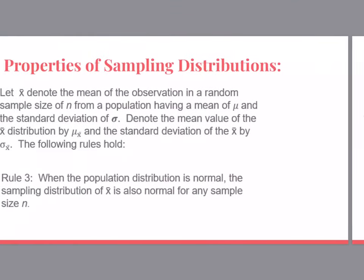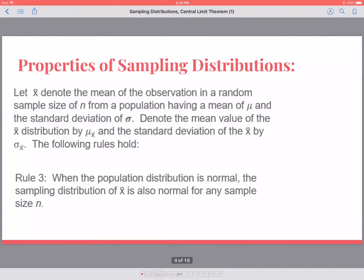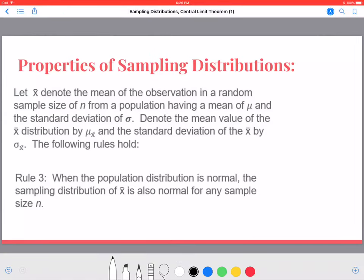Rule number three and rule number four sound similar, but they're a little different. So rule number three says, if I am aware of the shape of my actual population distribution, so if I know my population distribution has a normal shape, it doesn't matter what my sample size n is. I know the sampling distribution.